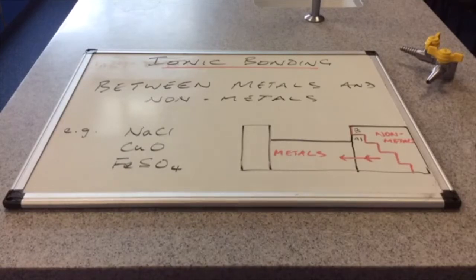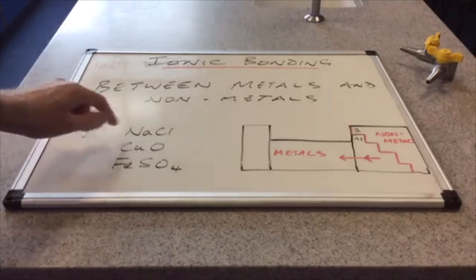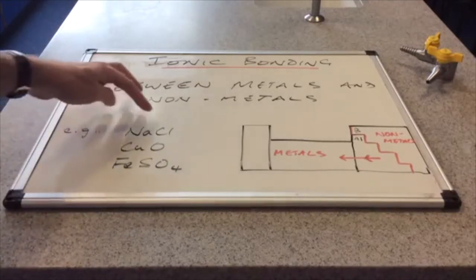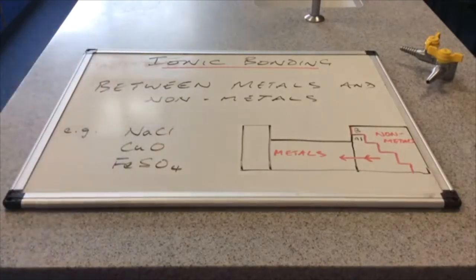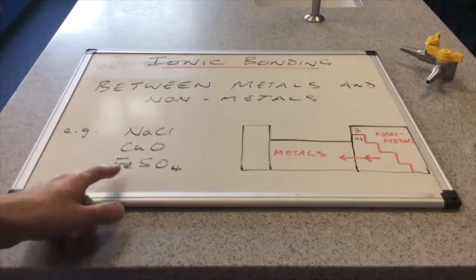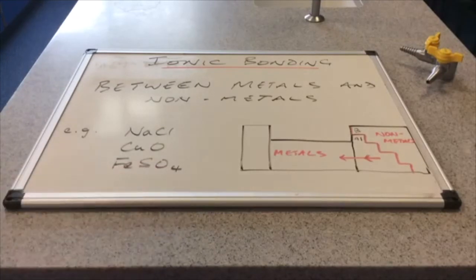So there's some examples for you. Sodium chloride - sodium is a metal, chlorine is a non-metal. Copper oxide - metal, non-metal. Iron sulphate - metal and these are non-metals.